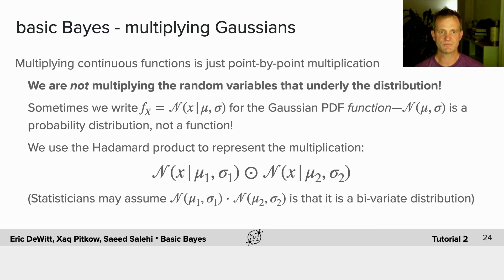Also note that sometimes people write f of x for this rather than the script n, which is normally used for the normal distribution or the Gaussian PDF function. And we usually use the Hadamard product to represent the multiplication, because statisticians sometimes use the normal dot multiplication to represent a bivariate distribution.